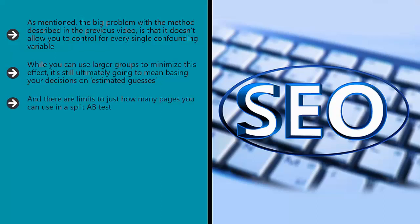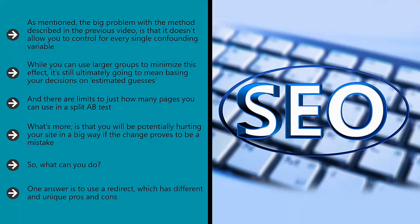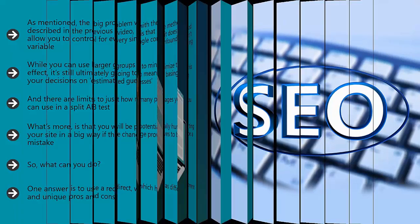And there are limits to just how many pages you can use in a split A/B test. If you're going to be changing the results across hundreds of pages on your site, then this will involve a lot of work. What's more is that you will be potentially hurting your site in a big way if the change proves to be a mistake. The whole point of A/B testing is to conduct the experiment in a controlled manner, so what can you do? One answer is to use a redirect, which has different and unique pros and cons.